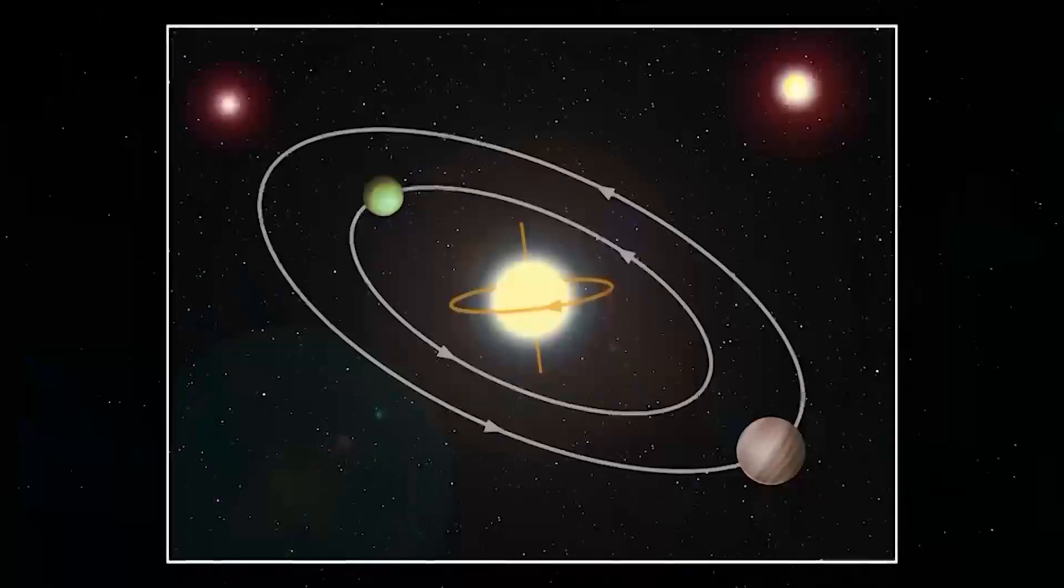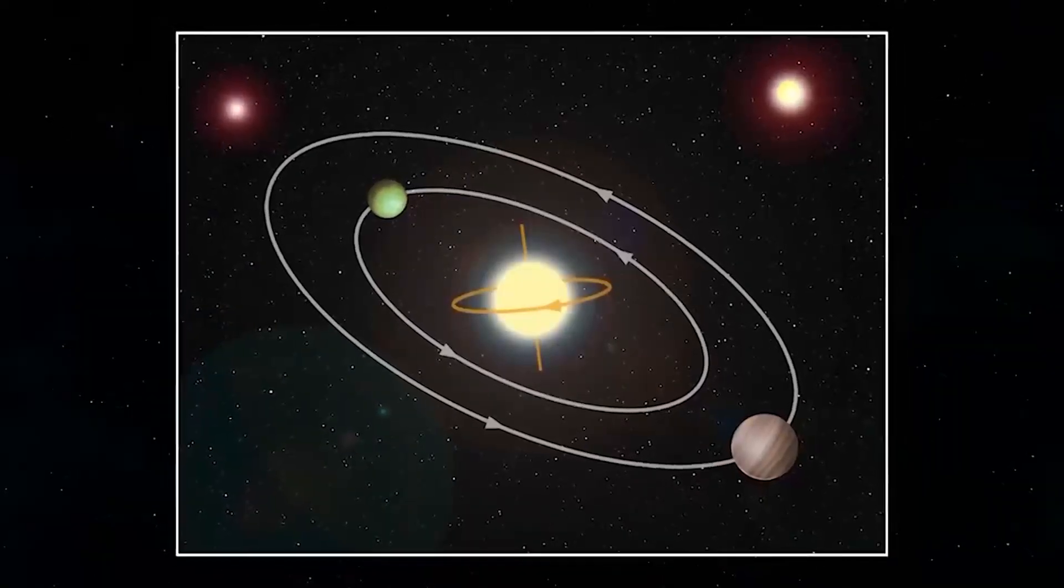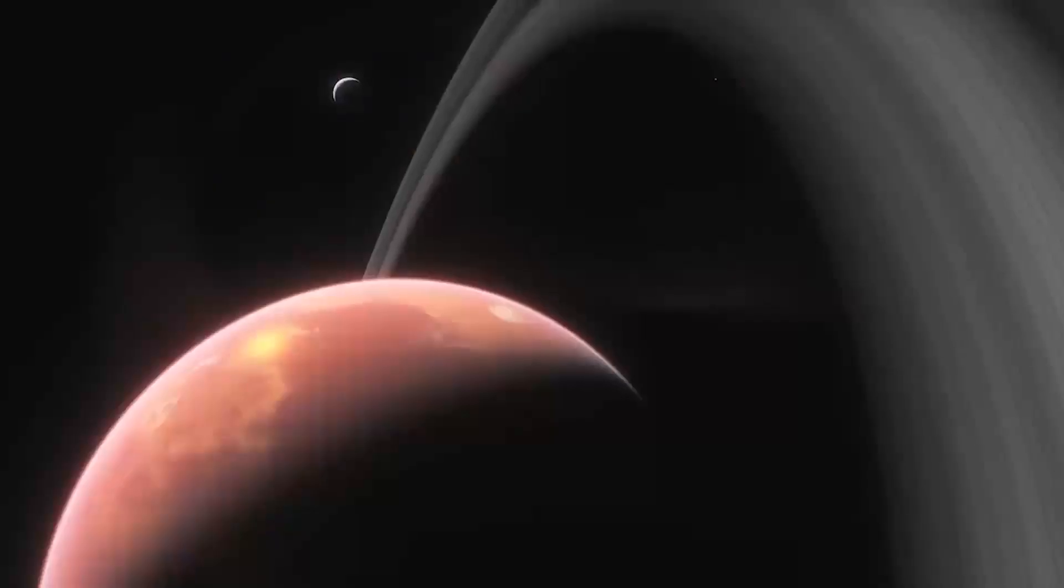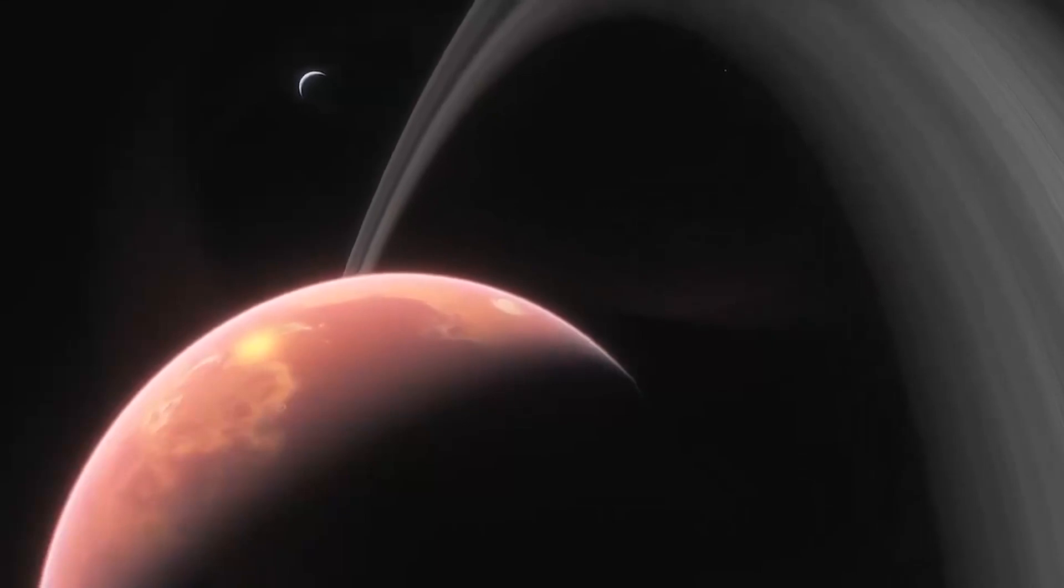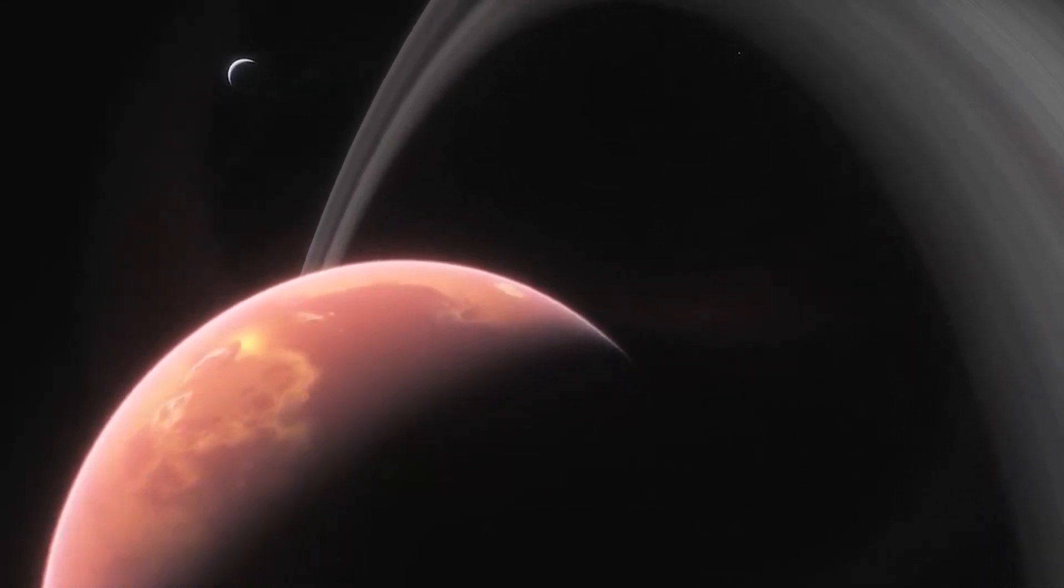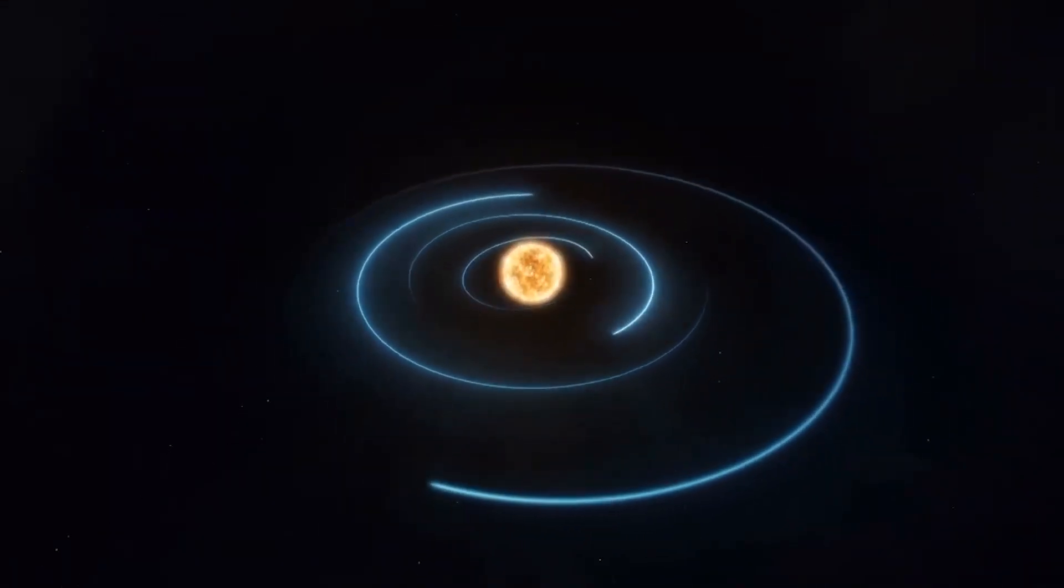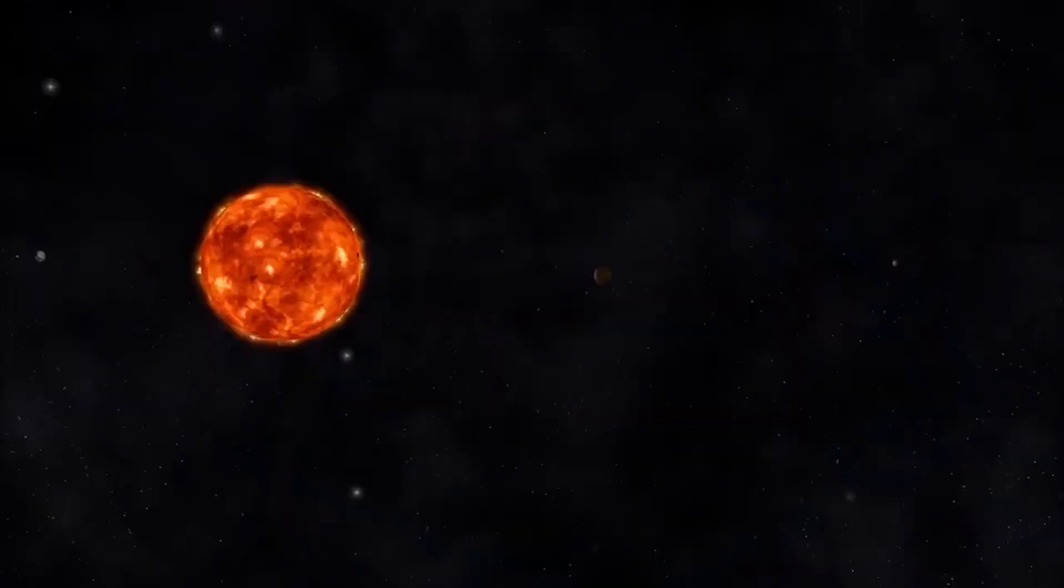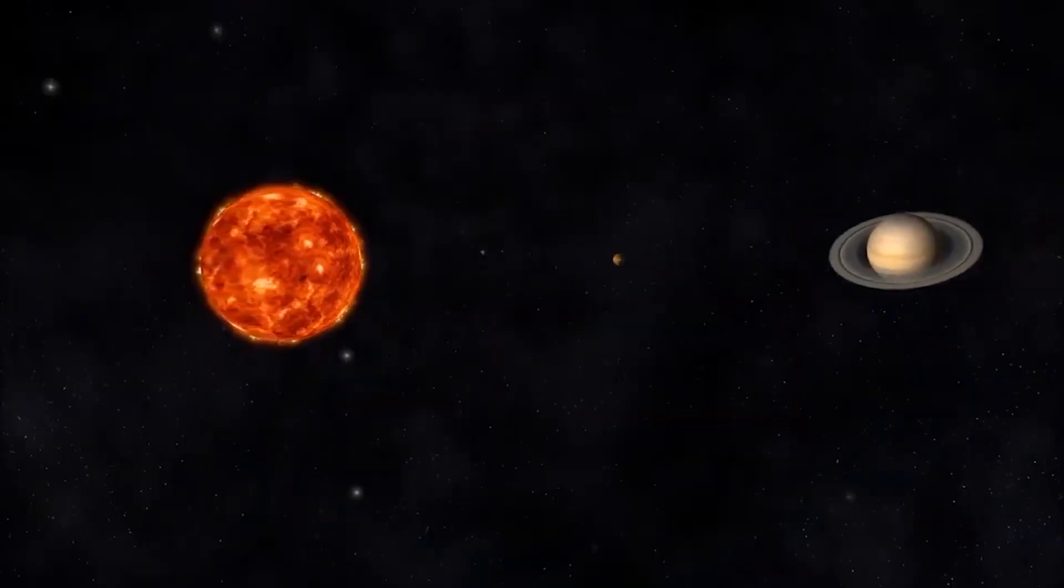Then, three years later, scientists announced that they had discovered a second planet orbiting the star, and it was dubbed Proxima c. This second planet of Proxima is a lot larger than Earth and orbits its star every 1,907 days. It orbits at about 1.5 times the distance from its star than Earth orbits from the Sun. Therefore, it's surely not within the habitable zone.